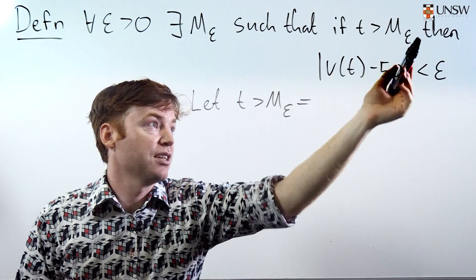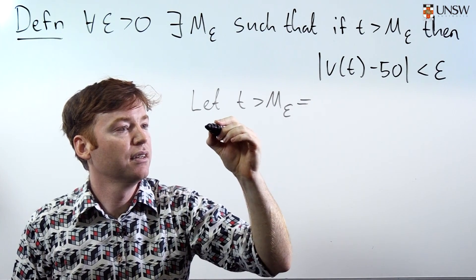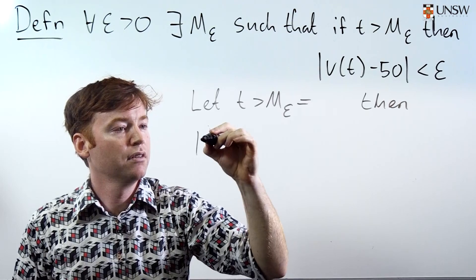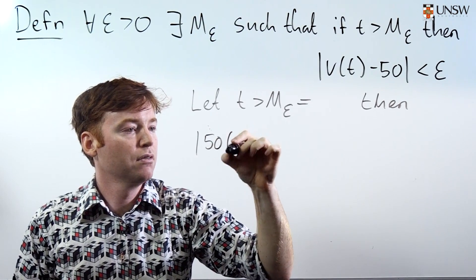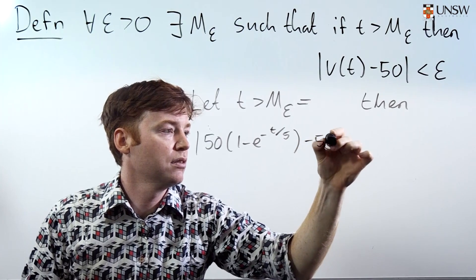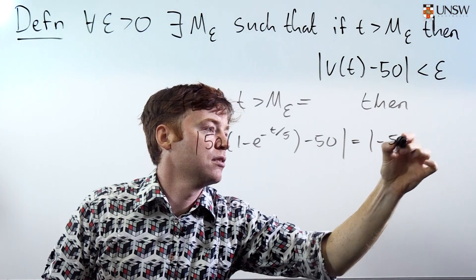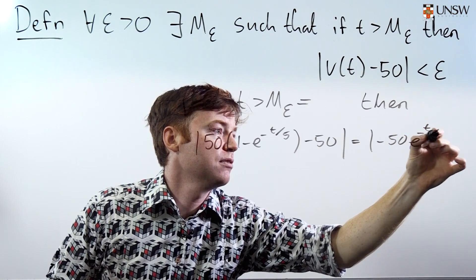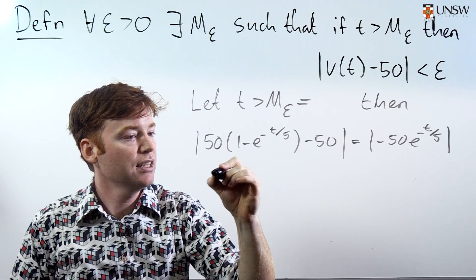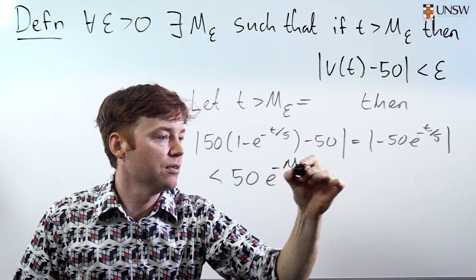Big enough for what? Well, big enough to satisfy this condition, that if t is bigger than M epsilon, then this thing is going to work. But let's unpack this. Then v of t minus 50, well, that's just 50 times 1 minus e to the negative t over 5 minus 50. Well, I could simplify this. That's just absolute value, negative 50 e to the negative t over 5. And if t is bigger than M epsilon, then this thing here is less than 50 e to the negative M epsilon over 5.